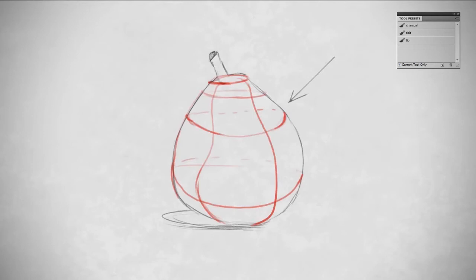So here you can see I've got contour and cross-contour lines that describe the surface of this pear. And when I look at the object, this is what I'm picturing.